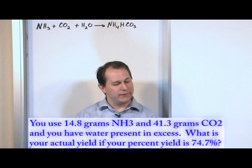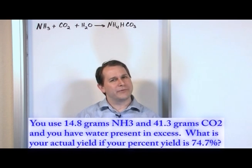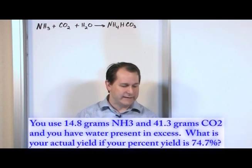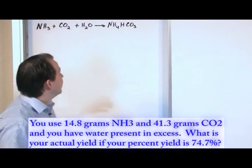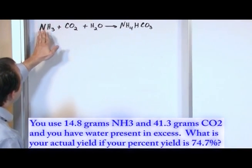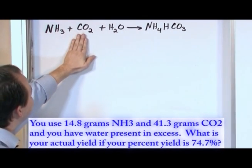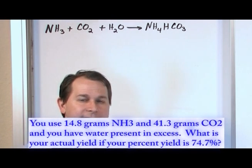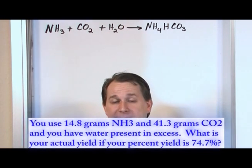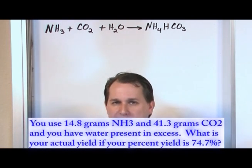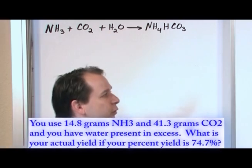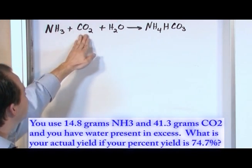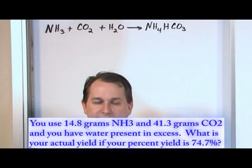If you don't know what percent yield is, this might seem confusing. Basically, we're told how many grams of NH3 and CO2 we have, and we're told that water is in excess — meaning we have so much water present we're never going to run out of it. So given that, one of the other reactants is going to be our limiting reactant.